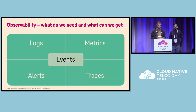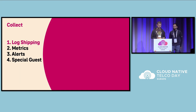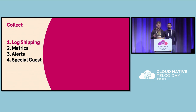So what's observability? It's events, and we have different kinds of events. We have the logs, we have the metrics, we have alerts, and of course also really important — we have traces. Next we'll talk about each of these steps: log shipping, metrics, alerts. Then we have a special guest, and we'll pass to Dorian who'll say something about log shipping.